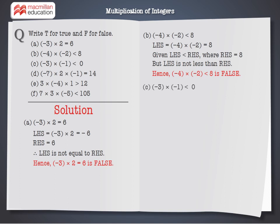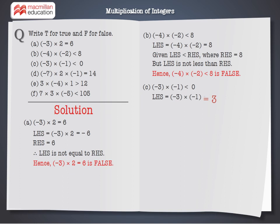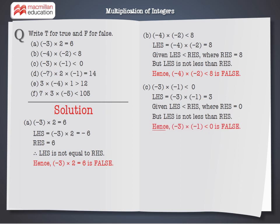C: Minus 3 into minus 1 is less than 0. LHS equals minus 3 into minus 1, which equals 3. Given that LHS is stated to be less than 0, therefore LHS is not less than RHS. Hence, minus 3 into minus 1 is less than 0 is false.